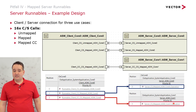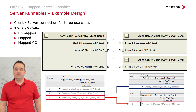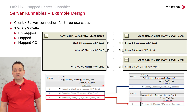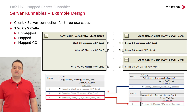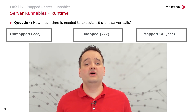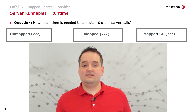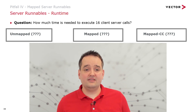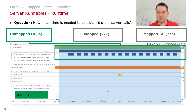I made a lean software design: an application software component client on core 0, connected to two server software components — one on core 0 and one on core 1. Runnables are executed in order, each calling its server. In the unmapped case, there are 16 direct C function calls. I measured only the time for executing these calls on my sandbox reference system — no code functionality in client or server, just a direct return. The 16 calls in the unmapped case take 4.3 microseconds in total.